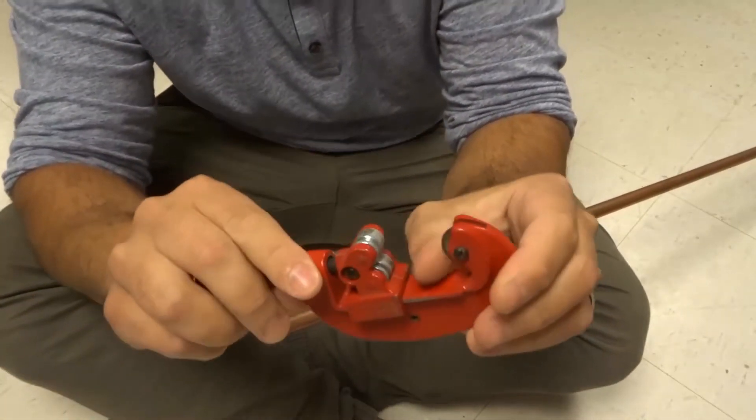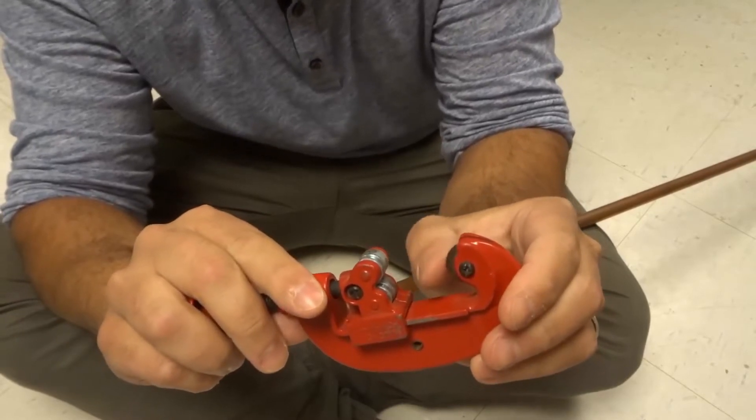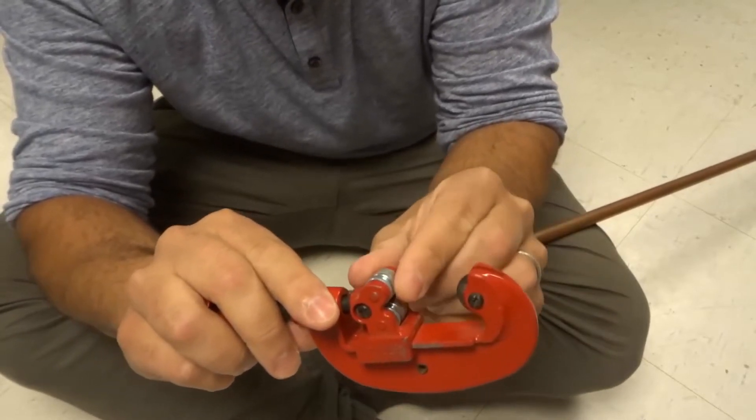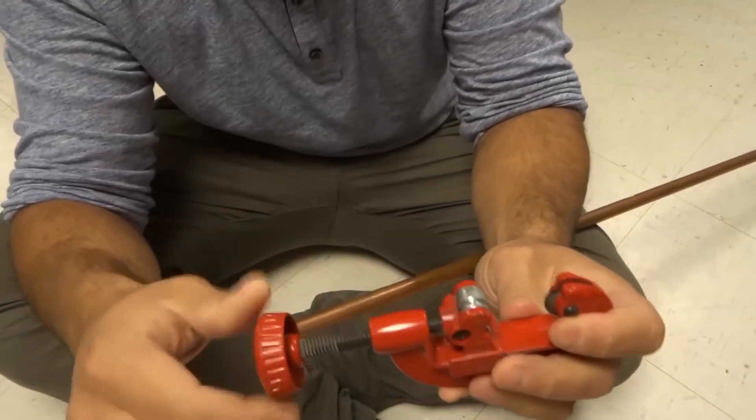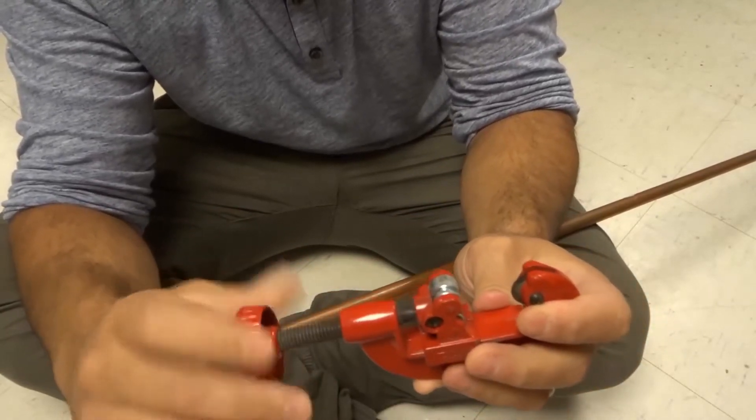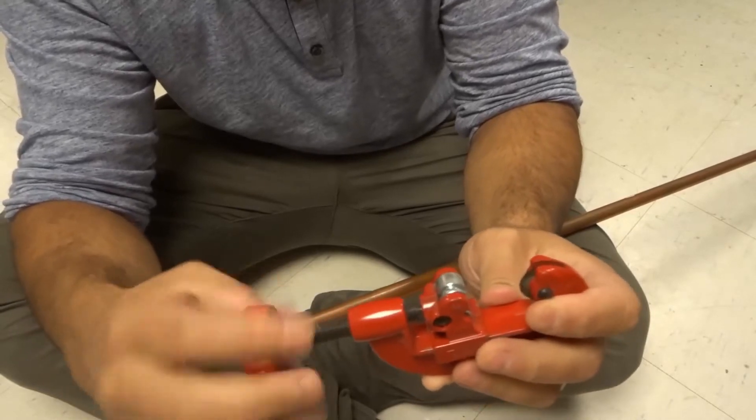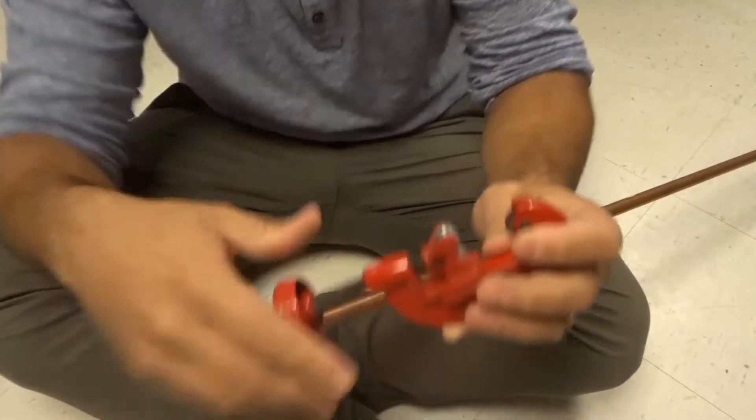Basically you have a blade over here, this is what actually does the cutting, and then you have this rolling system over here which allows it to spin around the pipe, and then you have this handle here that you can turn to make it tighter or looser so you can bring them closer together or further apart.